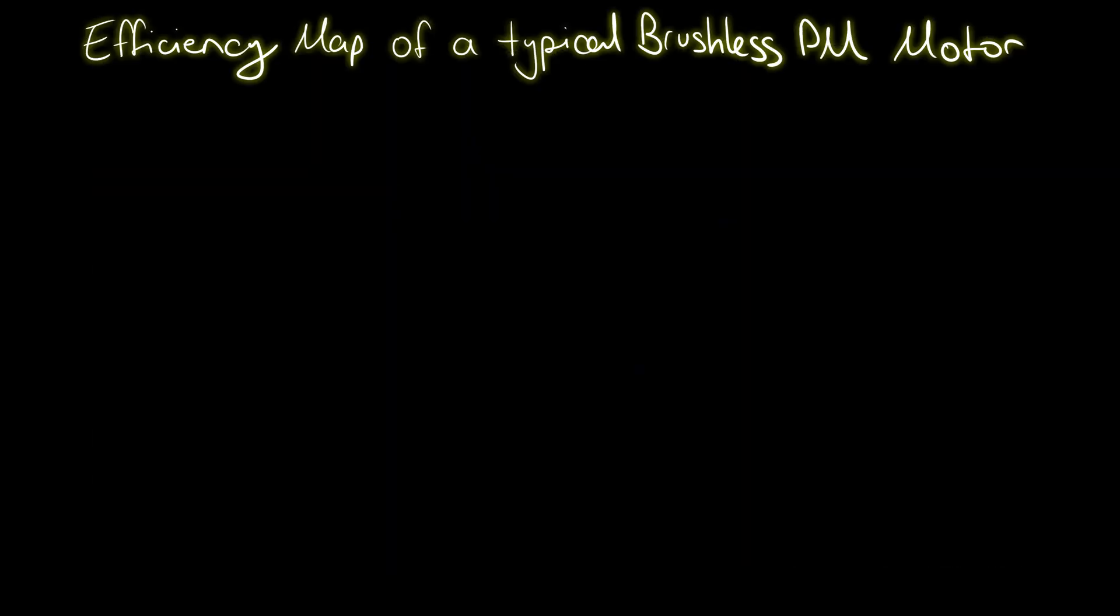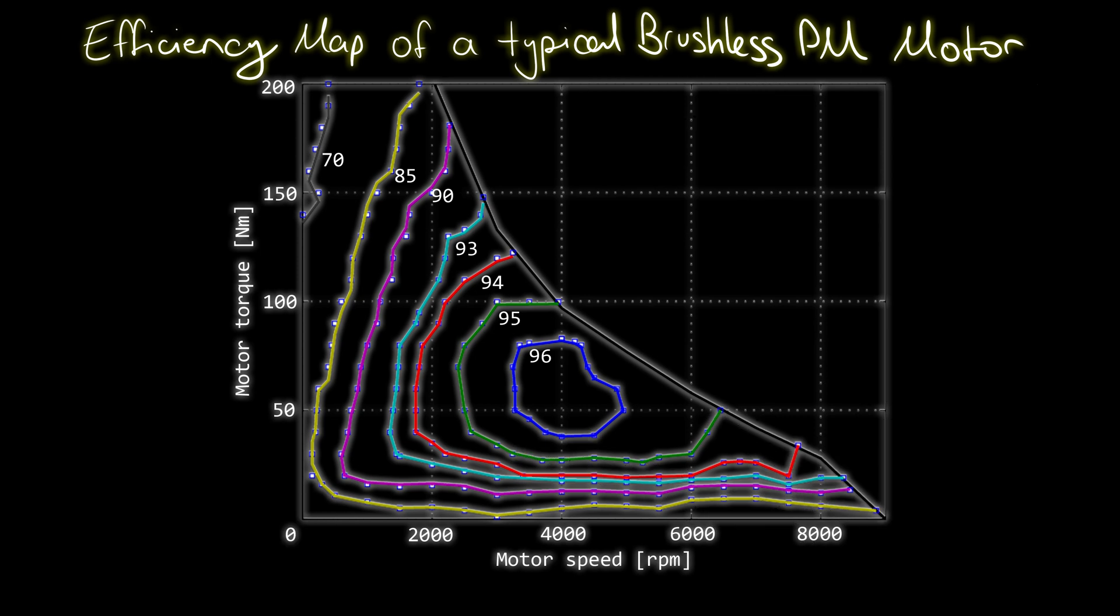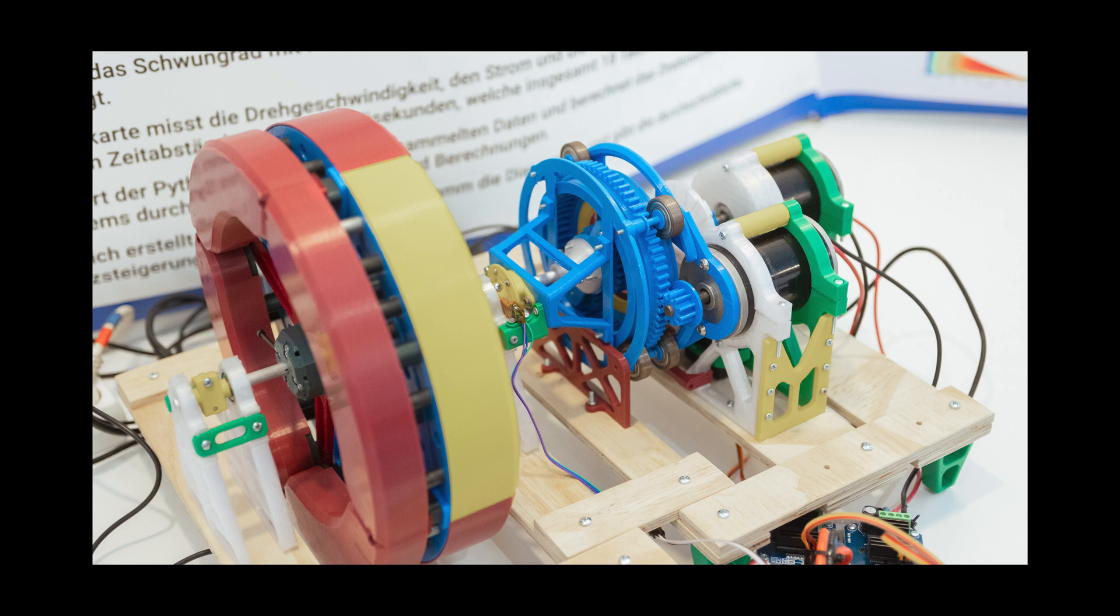So using this planetary system, we can theoretically distribute the load between the two motors effectively without adding too much friction, moving parts, or different types of motors. To prove this theory though, I built a test stand to compare this system against a single motor.